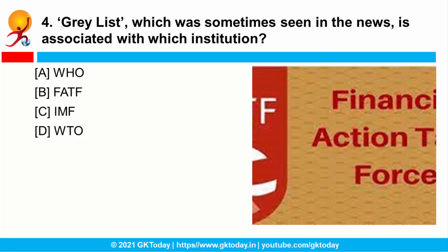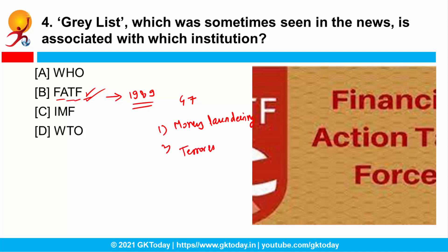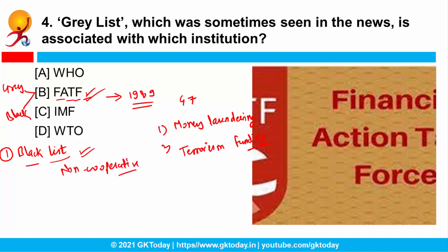The next question is related to FATF — the Financial Action Task Force. FATF is an intergovernmental organization founded in 1989, as an initiative of G7 countries, to develop policies to combat money laundering and terrorism funding. It has mainly two lists: the grey list and the blacklist. Countries that are actively supporting terror funding and money laundering are placed in the blacklist and are called non-cooperative countries. Countries in the grey list are not considered safe but are under increased monitoring rather than outright blacklisting.